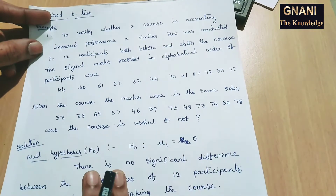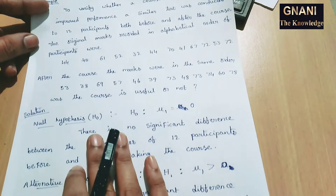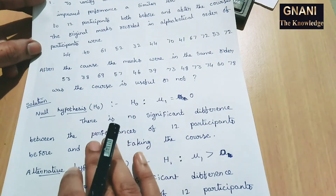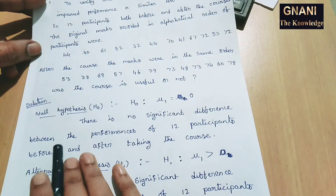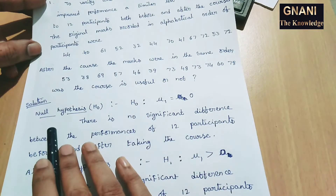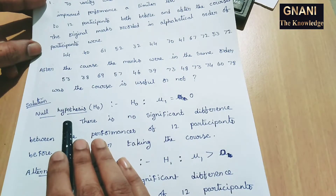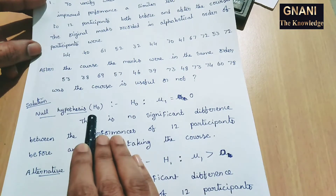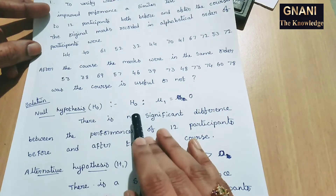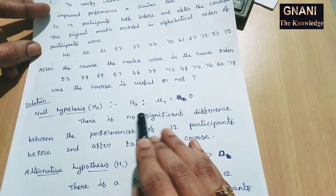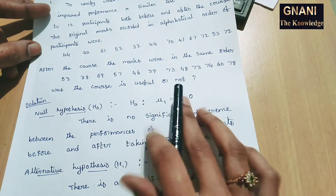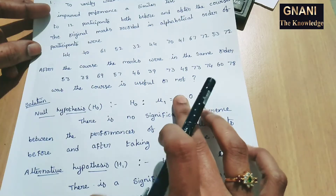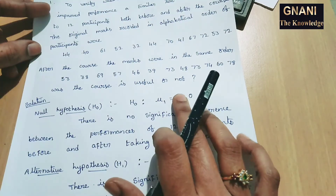So this is the problem. We will start testing the hypothesis process. What is the first step? Null hypothesis. Null hypothesis is denoted by H0. So here H0 is mu1 equal to 0.